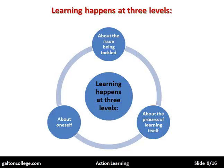We're also learning about the process of learning about that issue. The problem gives us a learning platform — an unusual way to look at learning, but the problem creates an environment for us to learn. So we're learning about the process of learning itself. Once we've resolved the problem, we now know how to go about resolving similar problems in the future. So there are three different levels of action learning.